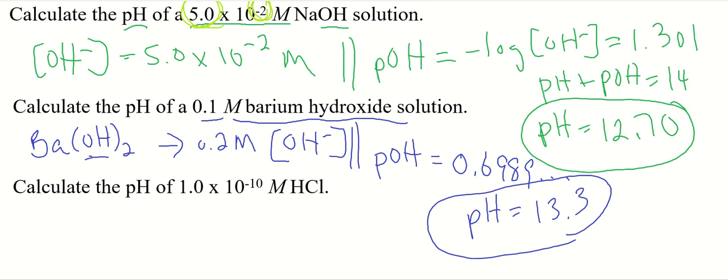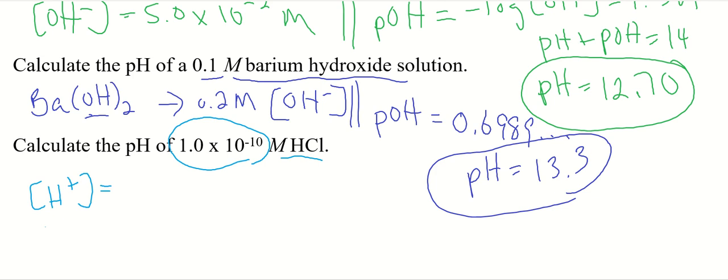Last one. Now this one you're not going to get on your test, but it's just a kind of tricky question that was thrown in here. This is a strong acid, so it's going to completely 100% ionize, but look at the tininess of that number. That's less than the self-ionization of water. If you recall in the auto-ionization of water, you get a very, very, very small amount of H+ and OH- just in pure water.